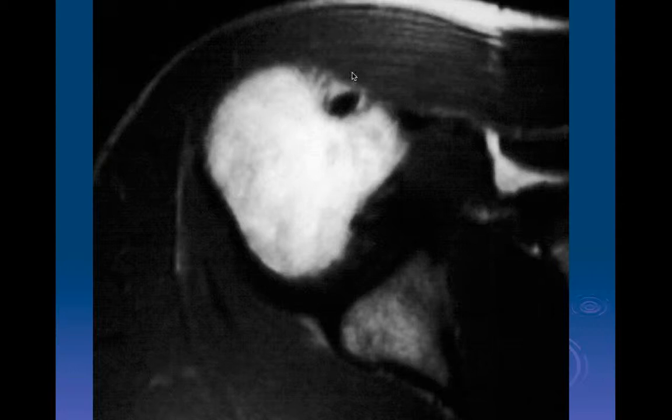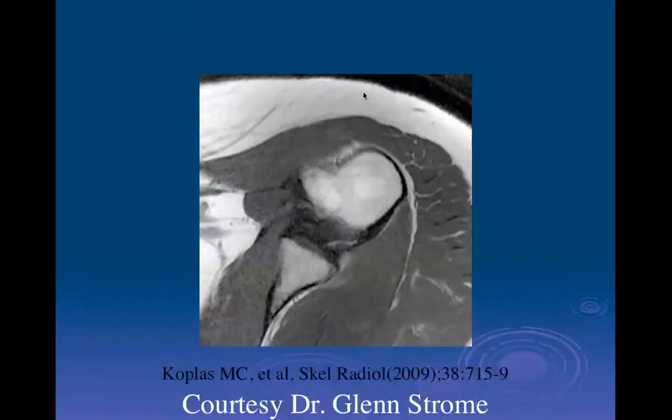So here is the lesser tuberosity, there's the greater tuberosity, and this is the intertuberous or bicipital groove. The long head of the biceps tendon should be almost round, slightly oblong, and should be seated deep within the well of the intertuberous groove. It should not be subluxed anteriorly. The subscapularis is here, and there's a thin transverse ligament across the top — a continuation of the superficial fibers of the subscapularis — which helps stabilize the biceps in the groove.